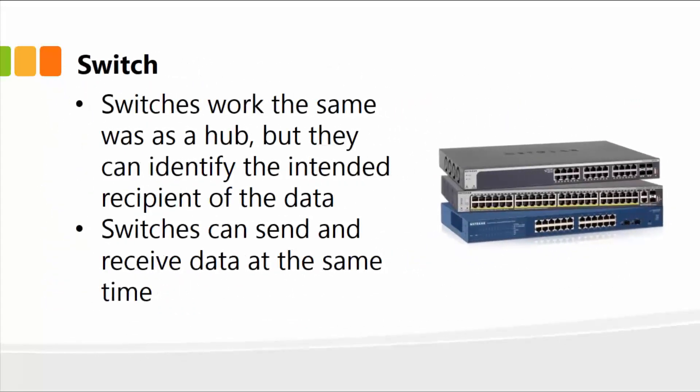A hub simply broadcasts all the data it receives to all nodes on the network. A switch works the same way as a hub, but it can identify the intended recipient of the data. Once the message is received by the switch, it looks at the MAC address and then only routes or sends the data to that particular computer — very efficient. Switches can also send and receive data at the same time, so they are very fast, but a little bit more expensive than hubs.